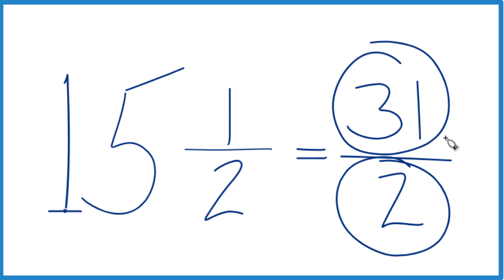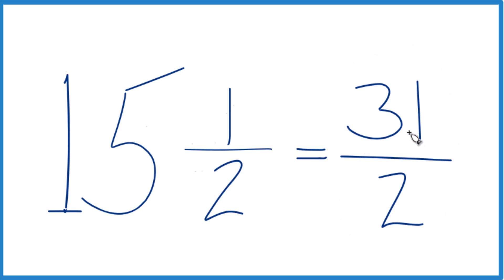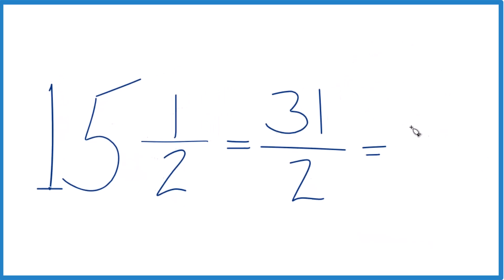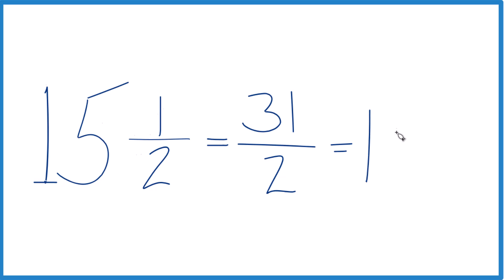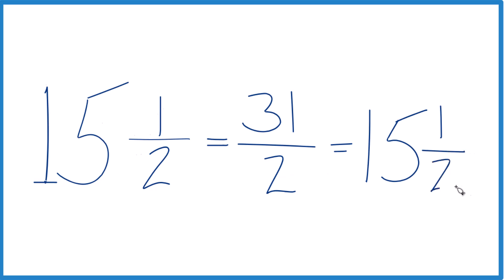Let's check our work here. 2 goes into 31 fifteen times because 15 times 2, that's 30. Then we just have 1 left over. Bring the 2 across and we get 15 and 1 half. That's what we started out with, so we know we did this correctly.